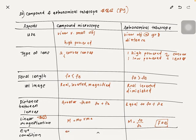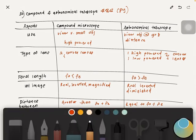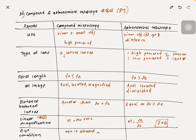For the eye condition: with a compound microscope the eye is strained, whereas with the astronomical telescope the eye is relaxed. Those are the differences between compound microscope and astronomical telescope.